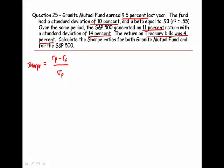For Granite Mutual Fund, the return on that portfolio was 9.5%, the risk-free rate is 4%, and the standard deviation of the fund was 10%. This gives us a Sharpe measure of 0.55.